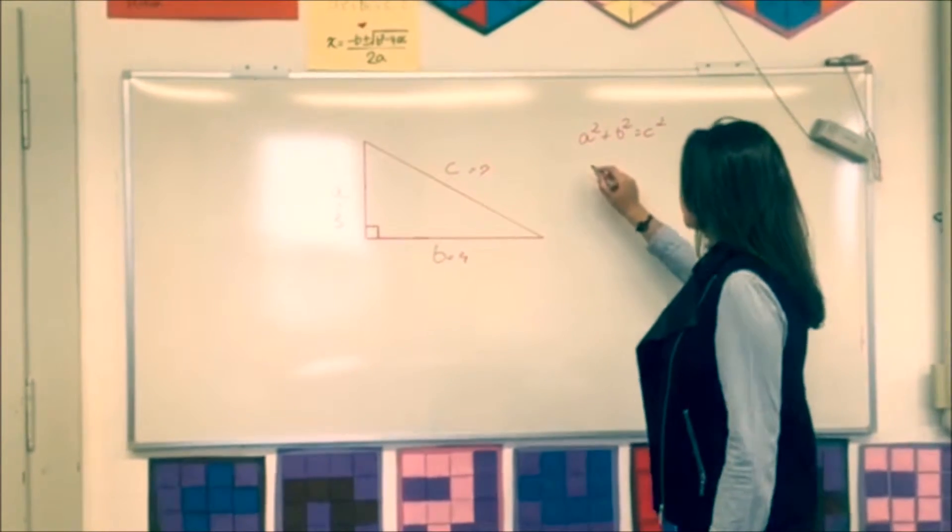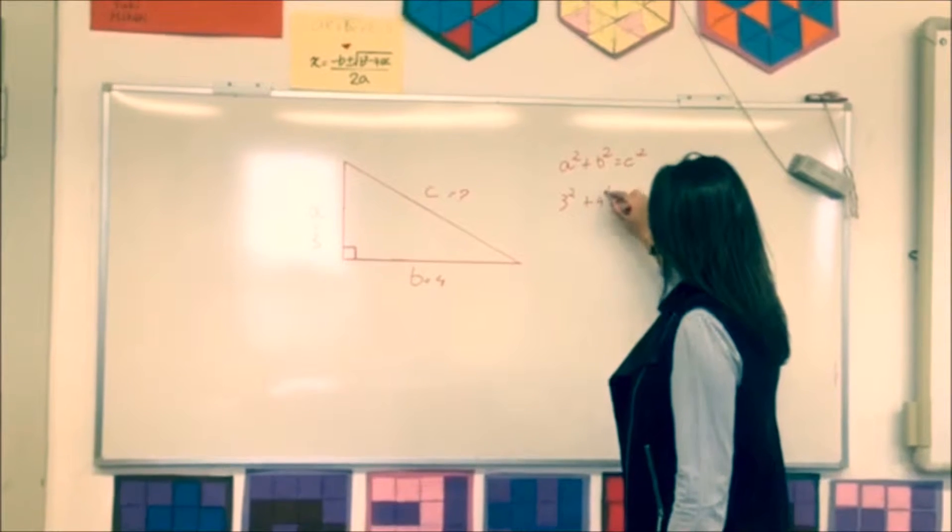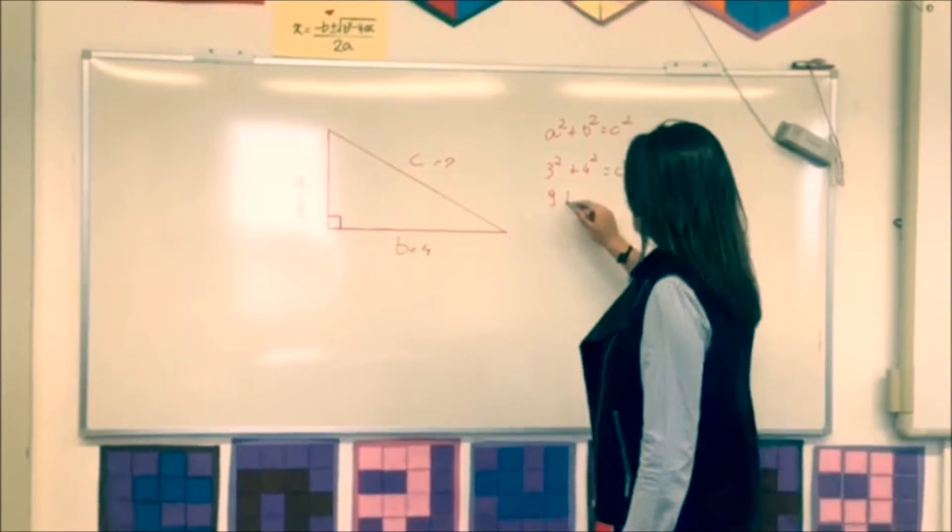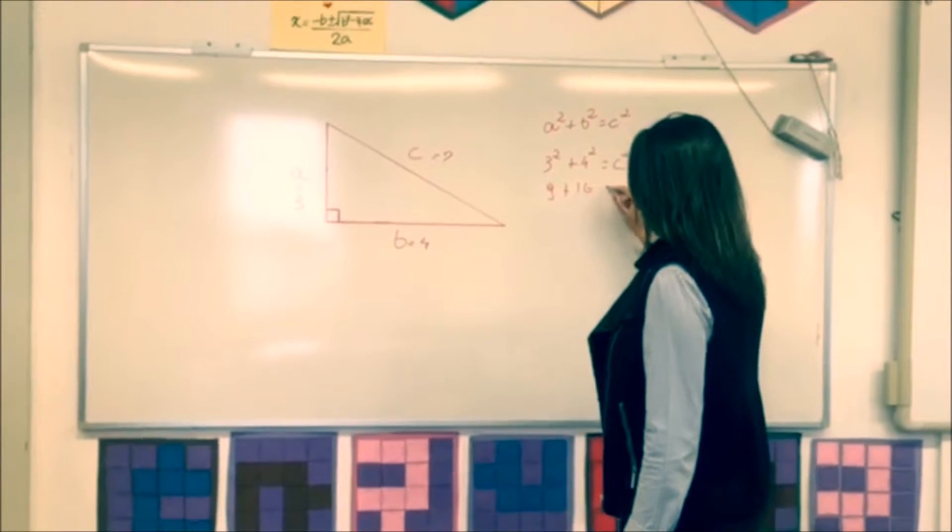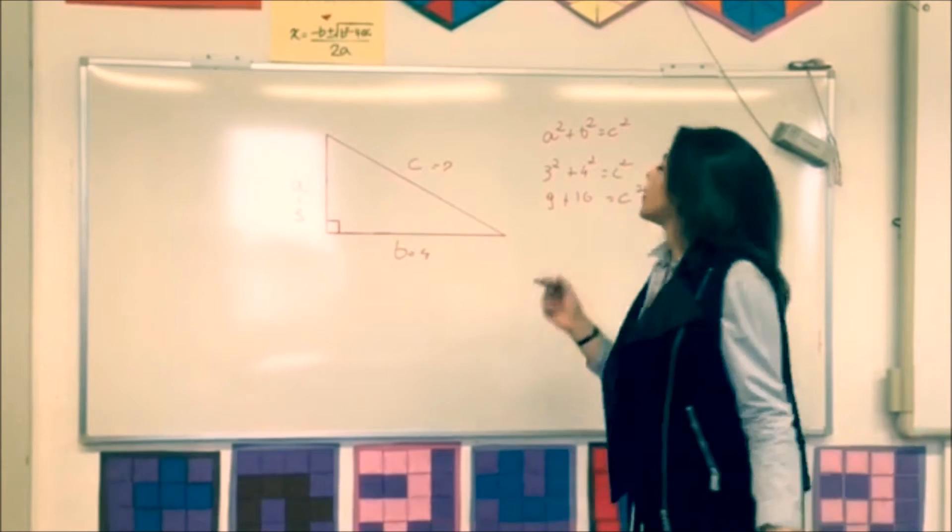We do 3 squared plus 4 squared equals C squared. 9 plus 16 equals C squared, which is 25.